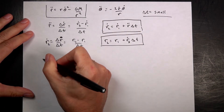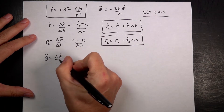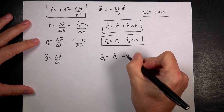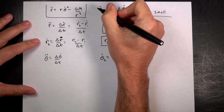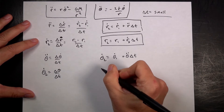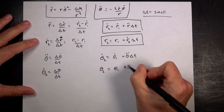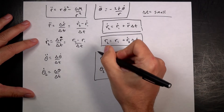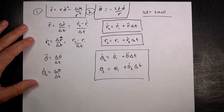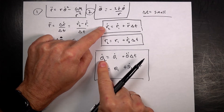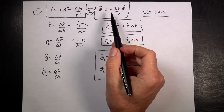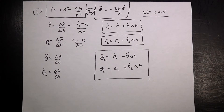The plan: (1) calculate r-double-dot, (2) calculate theta-double-dot, (3) update r-dot, (4) update theta-dot, (5) update r and theta. That covers one short time interval — then repeat it again and again.